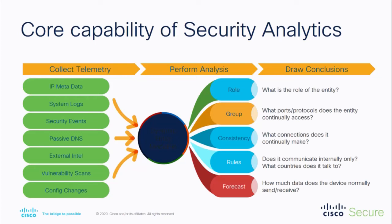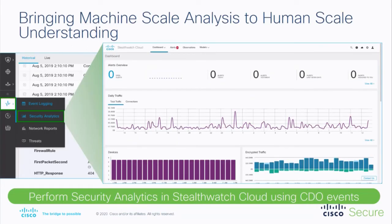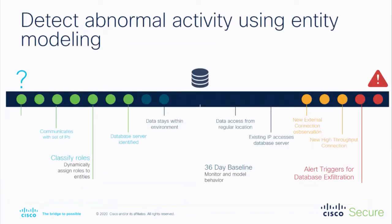Forecasting — getting a baseline on what normal means for that particular entity — is highly critical. This is what it looks like in CDO, our policy management platform that pulls in logs from your firewall. We pivot into Stealthwatch Cloud to show you what that particular entity's observations and details look like. You've got a threat that's not doing anything malicious — it's in your environment, we recognize it, we provide it an entity role, we group it, we know it's a data space service — perhaps an Amazon Web Services instance — and it stays in your environment. That's a 36-day baseline to monitor and model that behavior.